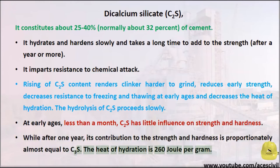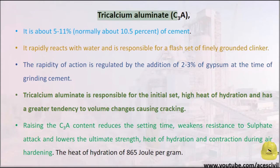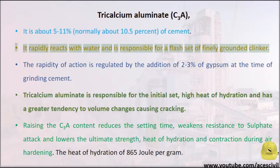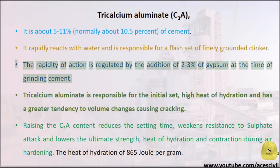The heat of hydration of C2S is 260 joules per gram. Tricalcium Aluminate (C3A) is about 5–11%, normally about 10.5%, of cement. It rapidly reacts with water and is responsible for a flash set of finely ground clinker. The rapidity of action is regulated by the addition of 2–3% of gypsum at the time of grinding cement.